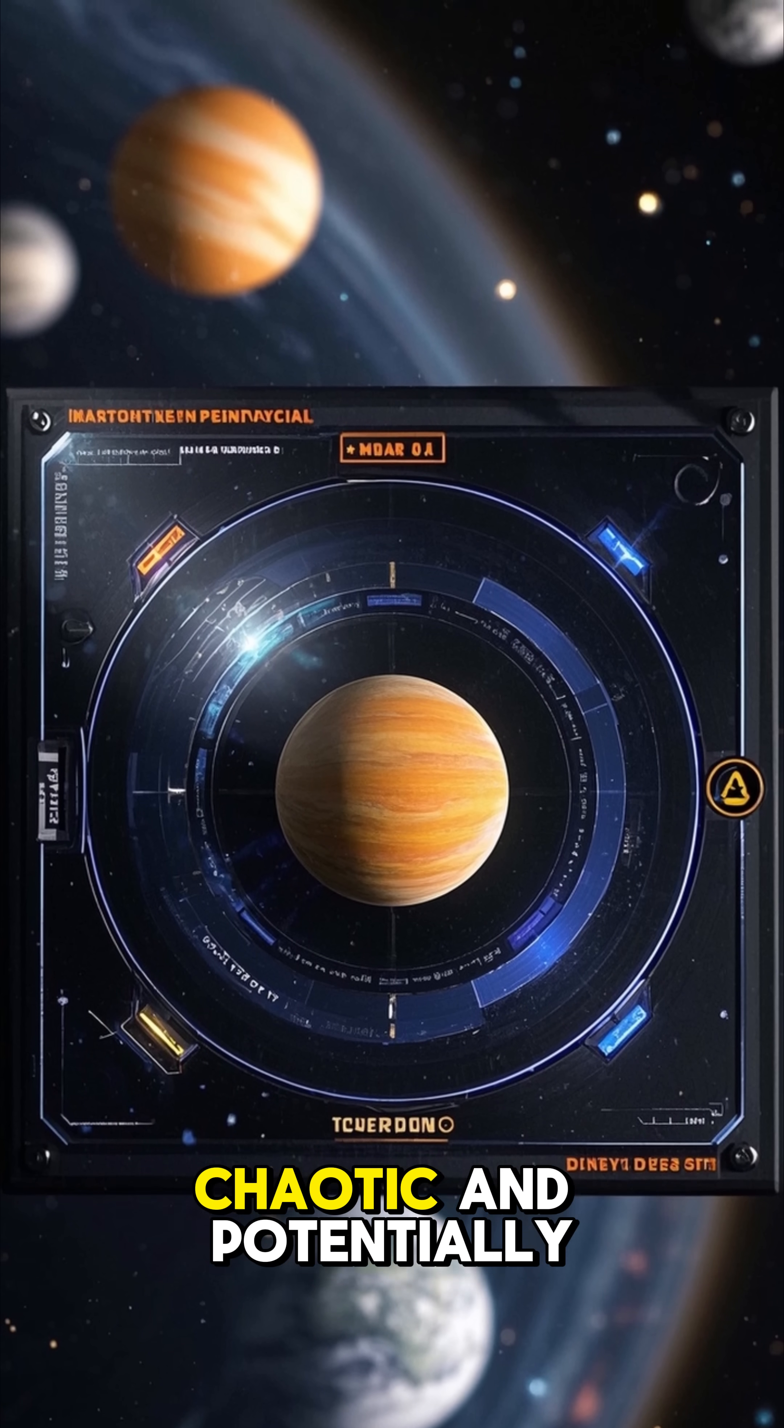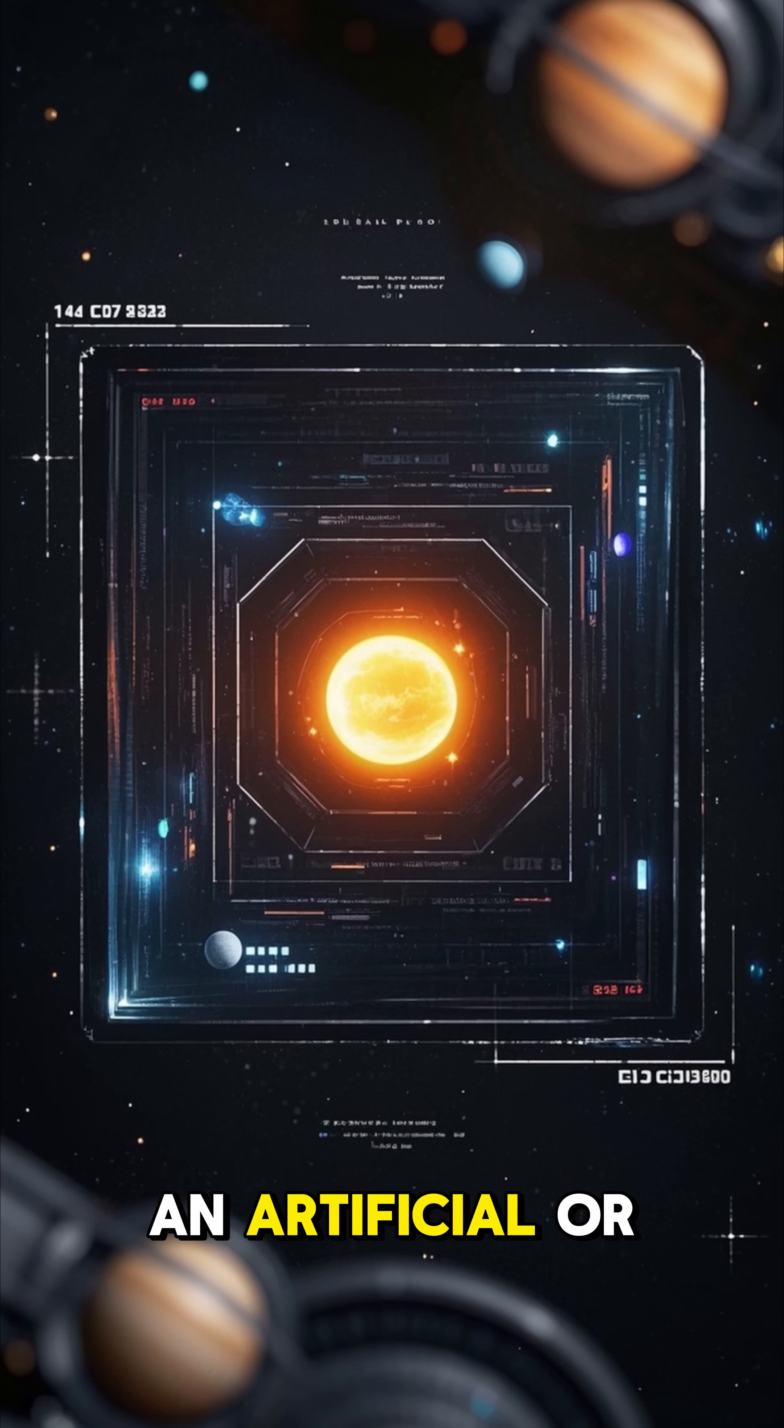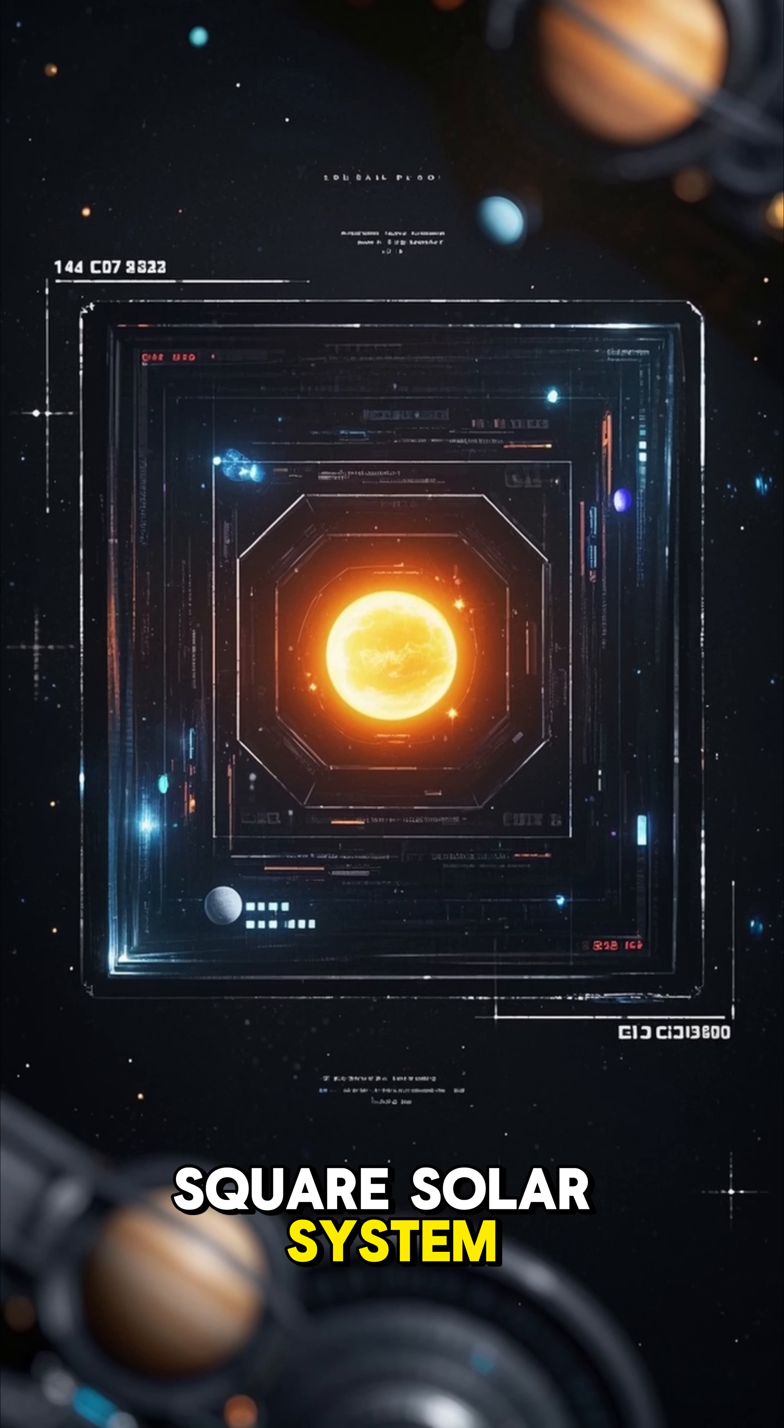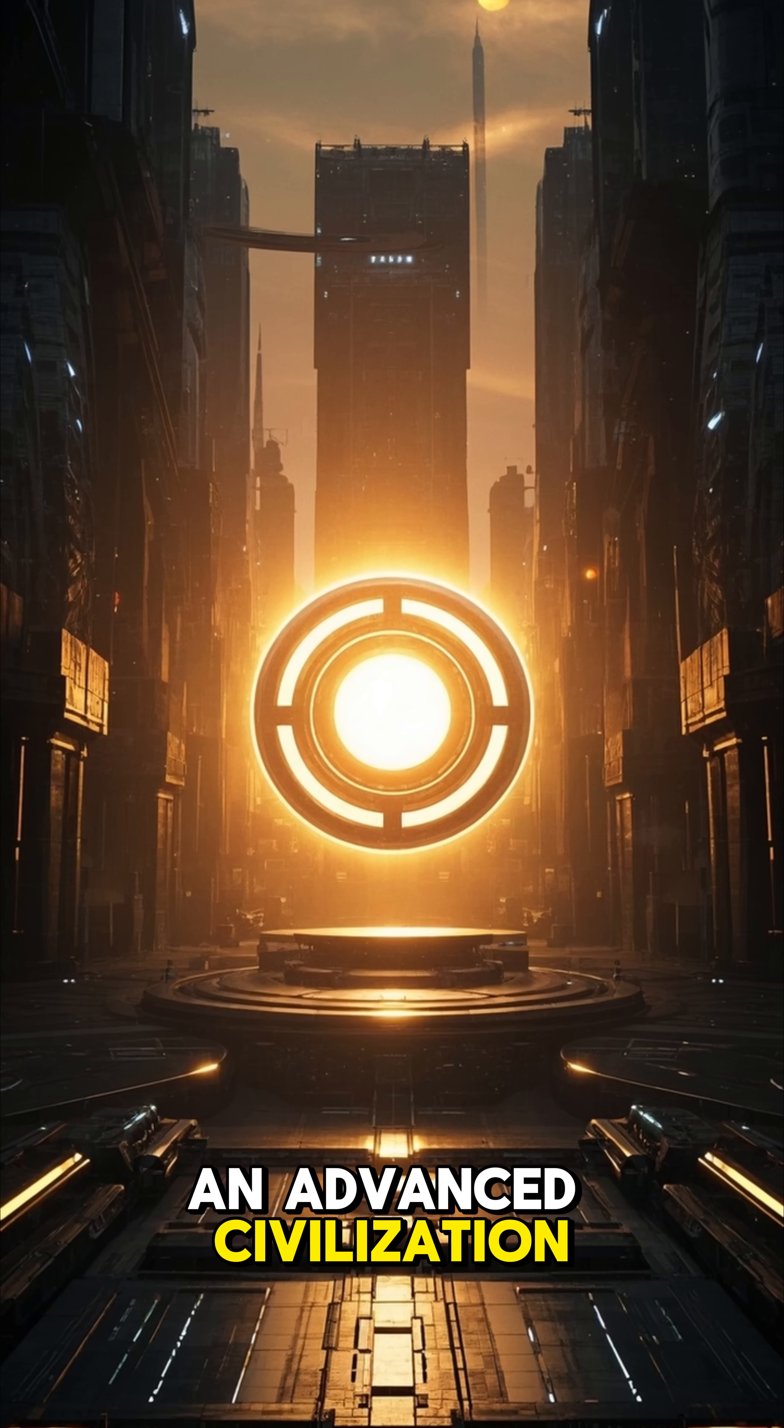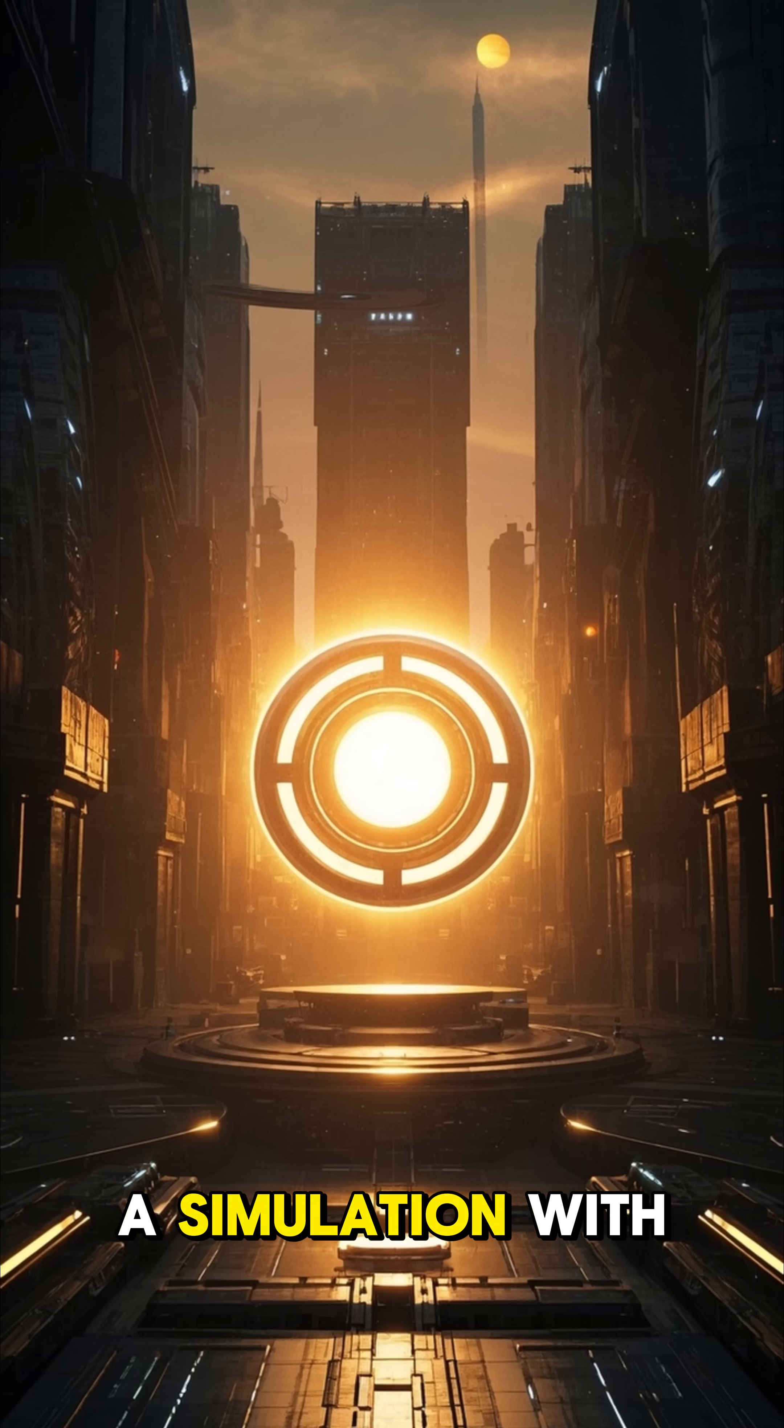A square shape has sharp edges and corners that would disrupt this gravitational balance, making planetary orbits chaotic and potentially ending life as we know it. It might imply an artificial or simulated reality. If we were to find a square solar system, it would imply that someone or something designed it that way. It could be a sign of an advanced civilization's engineering or evidence that we live in a simulation with its own rules.